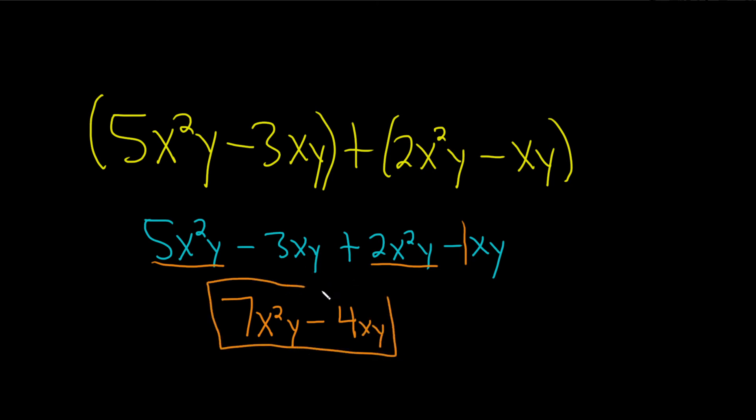So that would be the answer. Now we just need the degree. How do you find the degree? Well, what you do is you have to find the degree of each individual term. So the degree here—what you do is you add up the exponents. 2 plus 1 is 3.